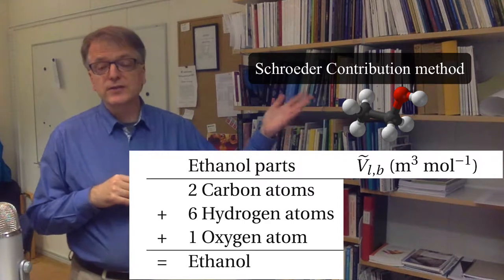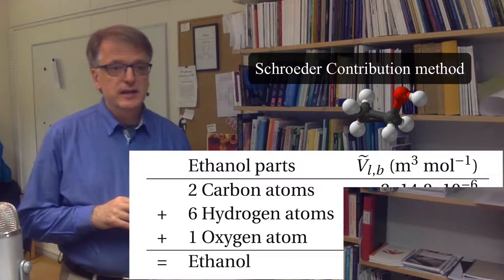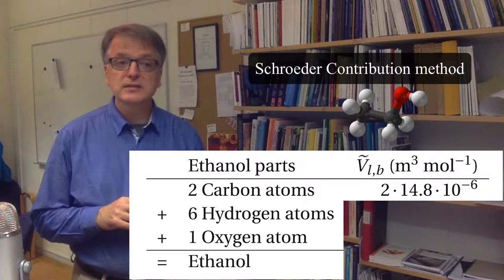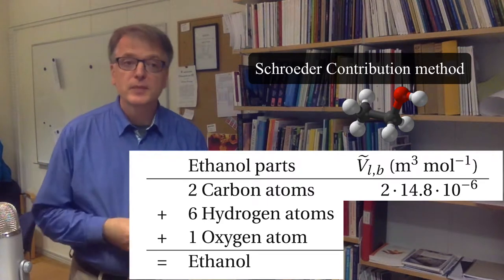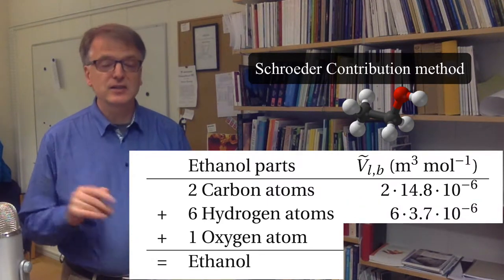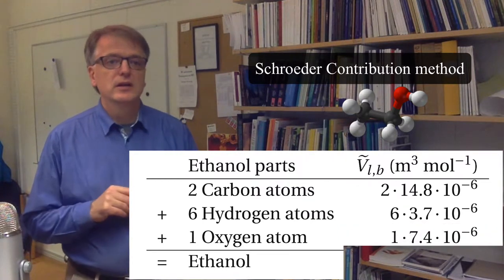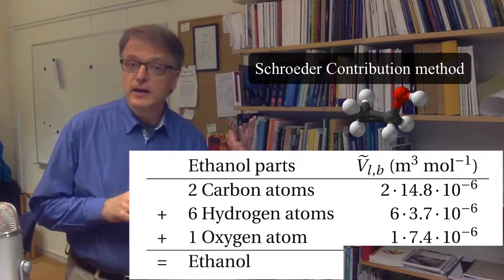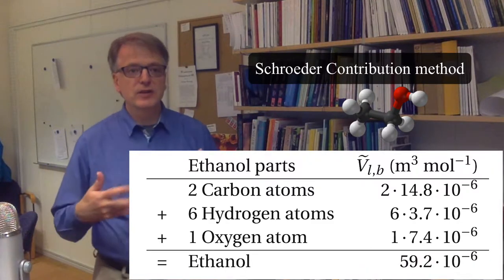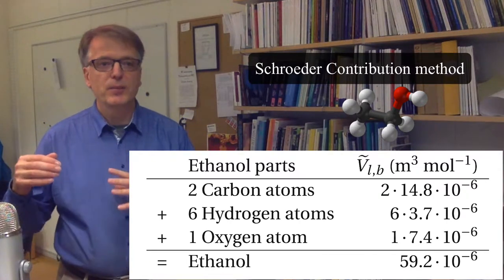So in the case of ethanol, you look this up and you see that two carbon atoms that takes up two times 14.8, 10 to the power minus six cubic meter per mole. And for hydrogen, it's six times, since it's six atoms, times 3.7. And for oxygen, it's one times 7.4. So you have one oxygen atom. And then you sum that together and get 59.2, 10 to the power minus six cubic meter per mole.